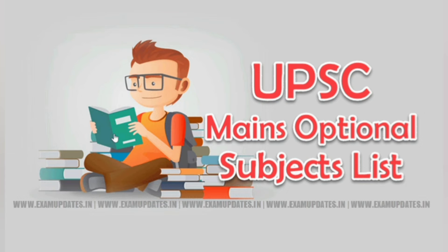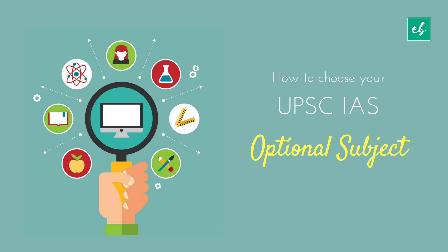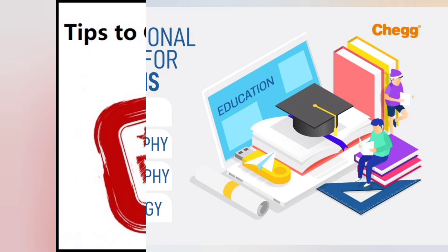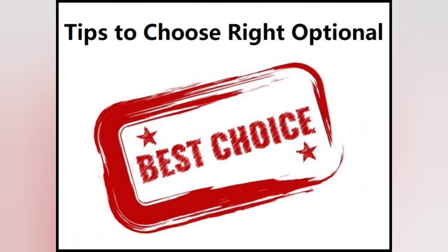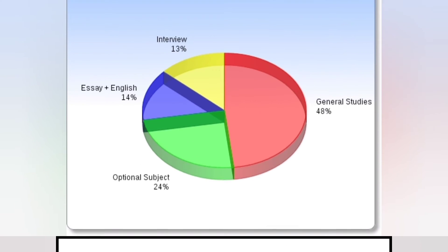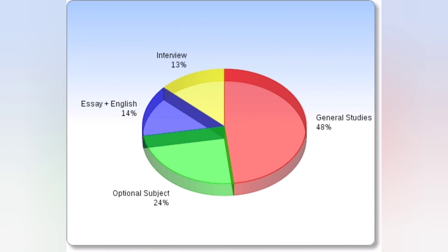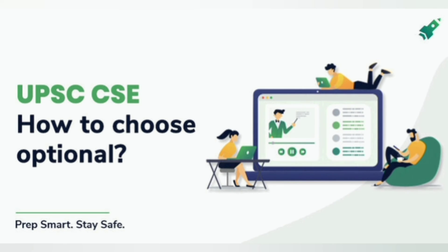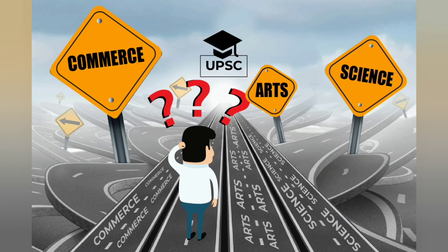Now the question is how to choose an optional subject for UPSC. The subject should enthuse you, make you want to know more about it, should not bore you, and make you think out of the box. Have books easily available. It is well advised to all candidates while choosing an optional subject not to think only of the score. Choose a subject with the above mentioned qualities, keeping in mind that these qualities may differ from one aspirant to another.